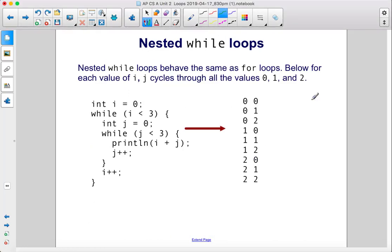Nested while loops behave the same as for loops. Below, for each value of i, j cycles through all the values zero, one, and two.